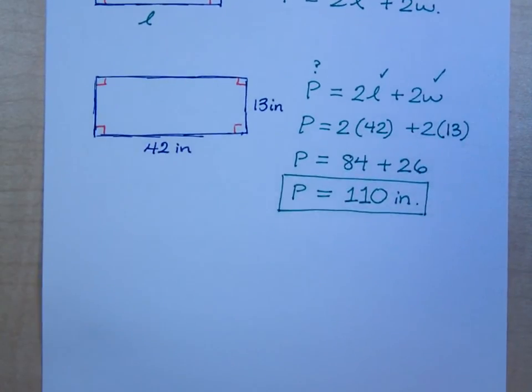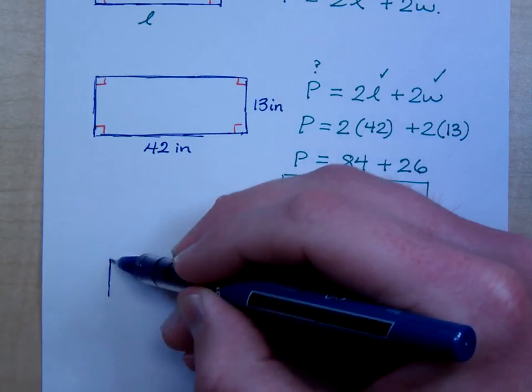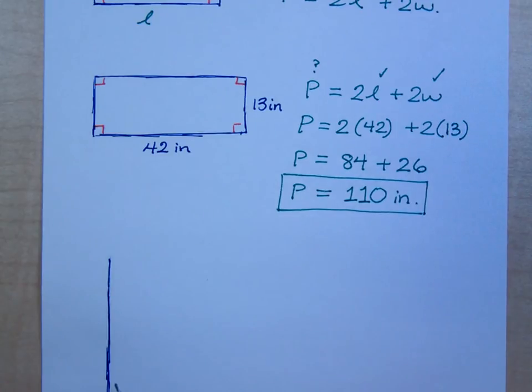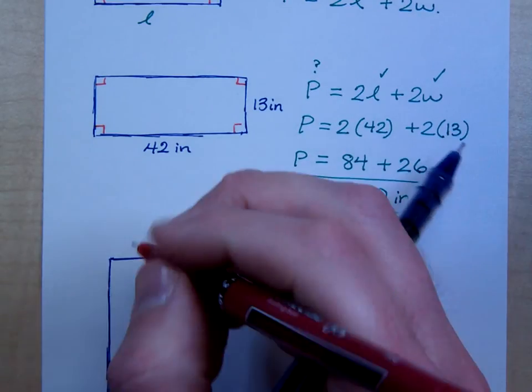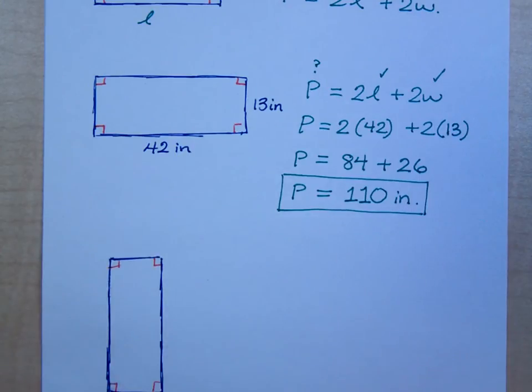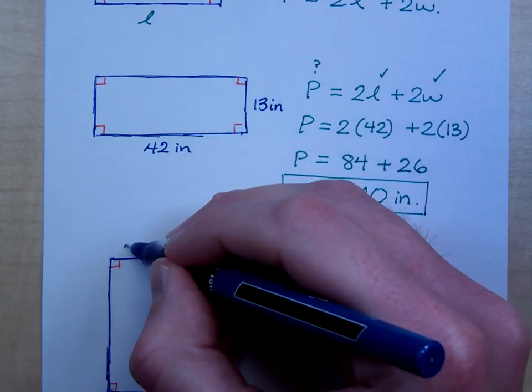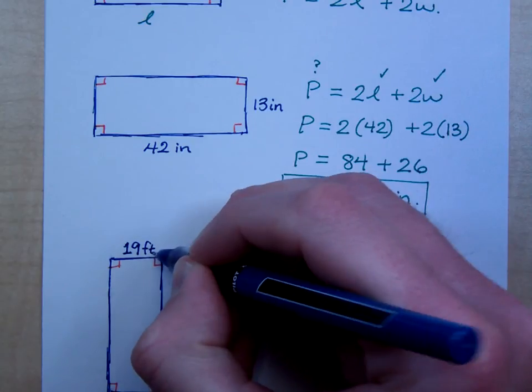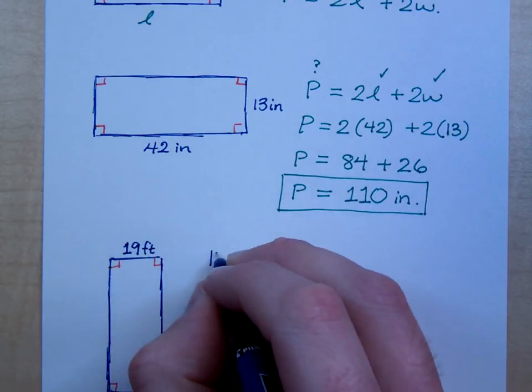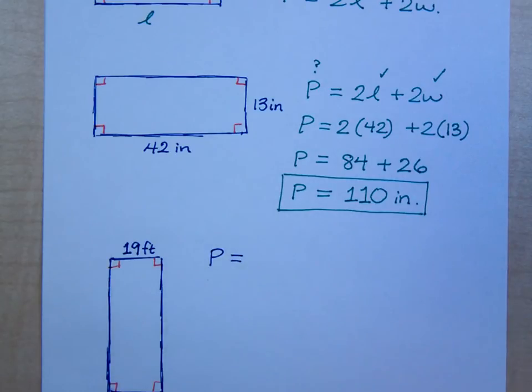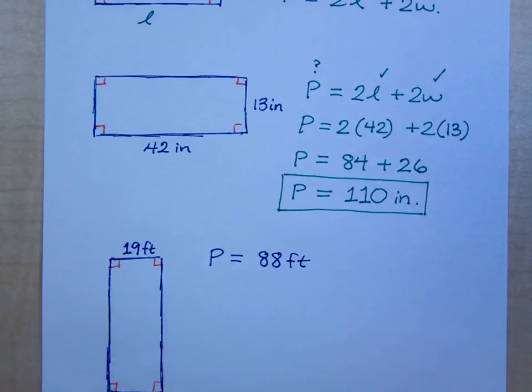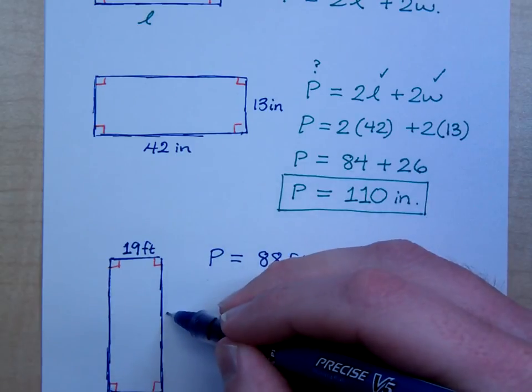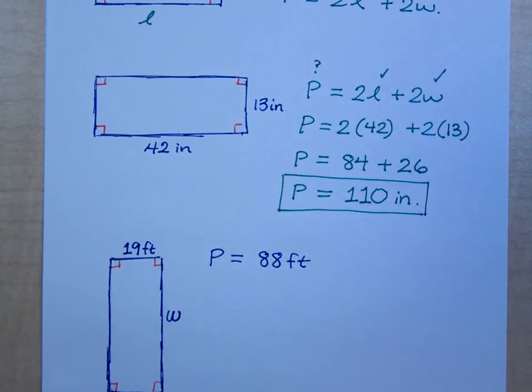All right. Might want to buckle up for this one. Or not. Live life on the edge. All right. So, let's look at this guy. If I say that this is 19 feet, and then I say that the total perimeter is 88 feet. Can you find this missing width, this W? Can you find that? Karen, you're nodding. You got this?